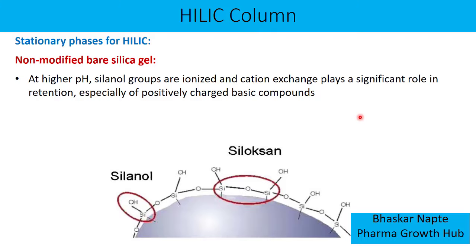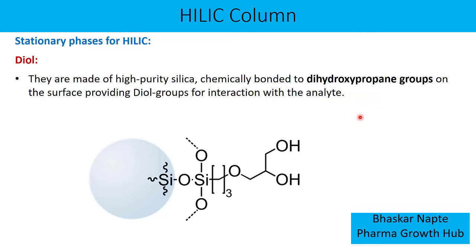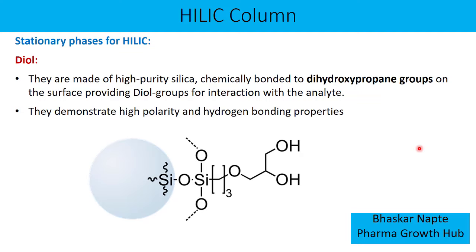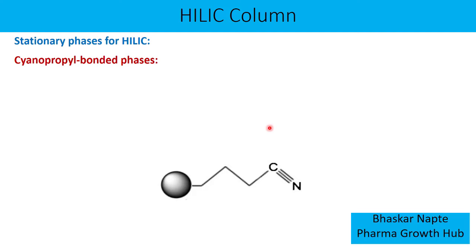The second HILIC column example is the diol stationary phase. These are made from high-purity silica chemically bonded with dihydroxypropane groups on the surface, providing diol groups for interaction with the analyte. This stationary phase can form hydrogen bond interactions with the analyte and demonstrates high polarity and hydrogen bonding properties.